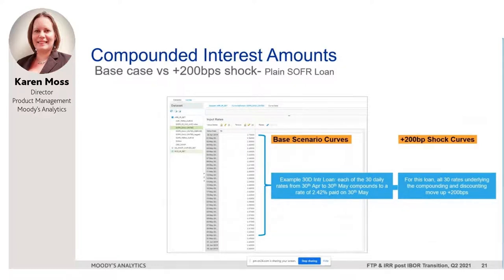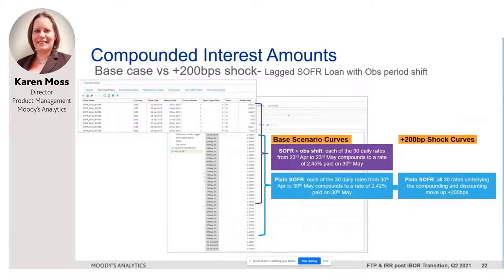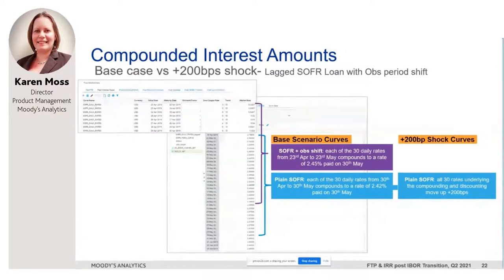What happens with my lagged SOFR loan with the five-day observation period shift? To account for the five-day shift, the index of forecast one-day rates is supplemented by actual past market rates from pre the reporting date. For every coupon for this lag loan there are a slightly different set of 30 rates being compounded up. Importantly from a sensitivity point of view, for the lagged loan's first coupon only 25 overnight rates underlying the compounding move up that two percent shock — the first five rates included are actuals booked before the reporting date. Both delta NII and delta EV will be impacted by including a lag convention.